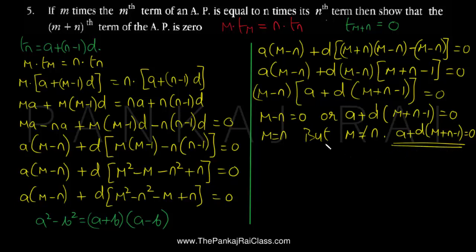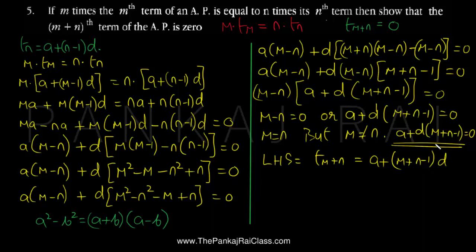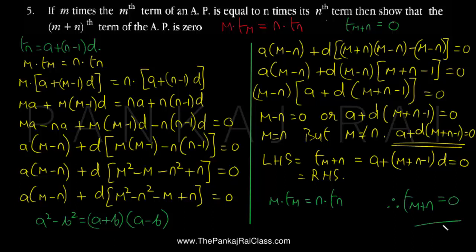Now we have to prove that T(m+n) is zero. Starting with the LHS, T(m+n) equals a plus (m+n−1)·D, using the formula for Tn with n replaced by (m+n). This term is exactly the same as what we derived, which equals zero, the RHS. Hence LHS equals RHS, and we have proved that if m times the mth term equals n times the nth term, then T(m+n) equals zero.